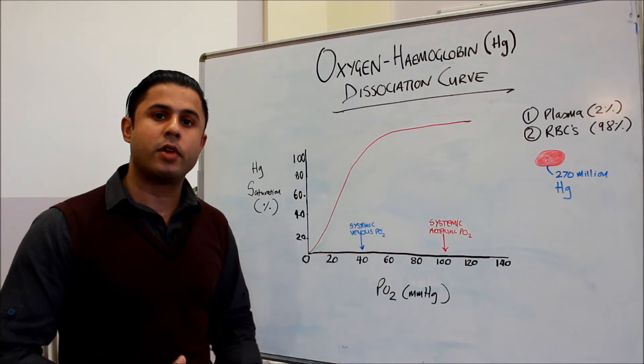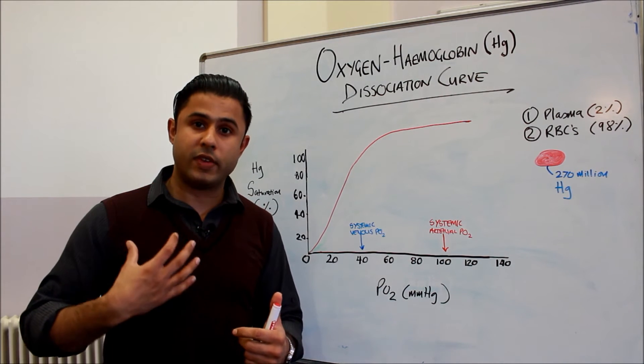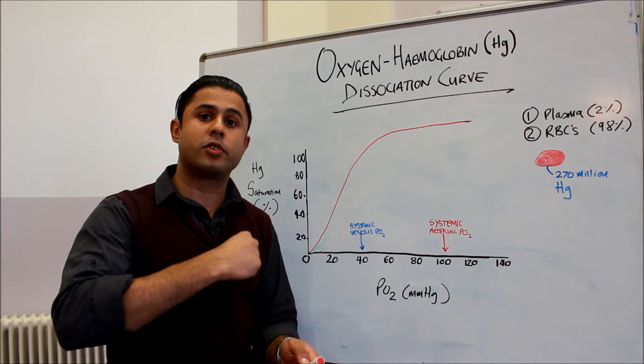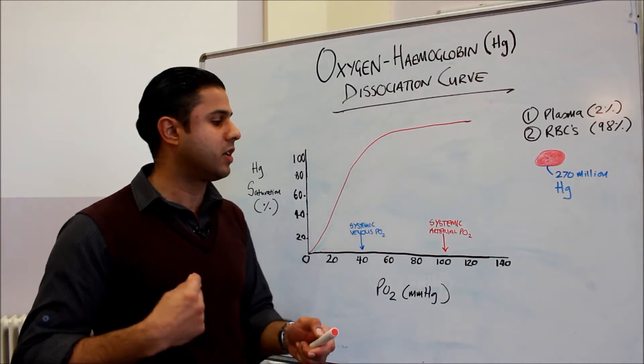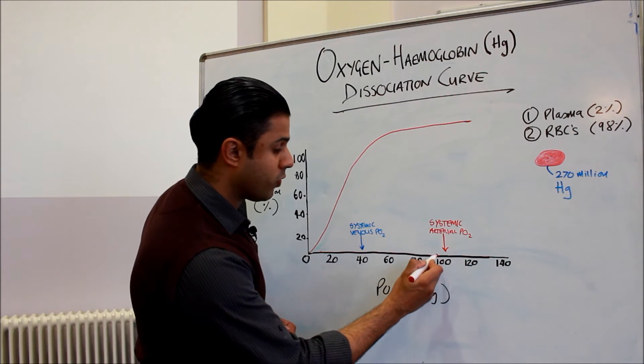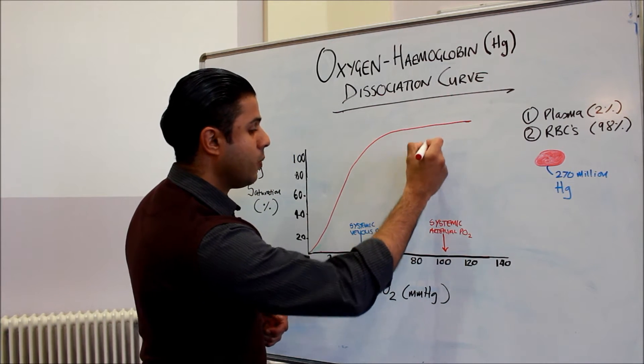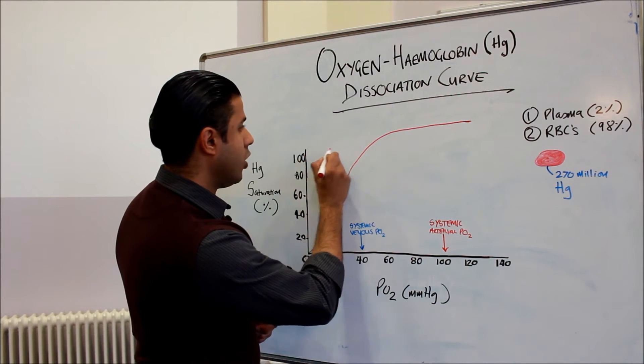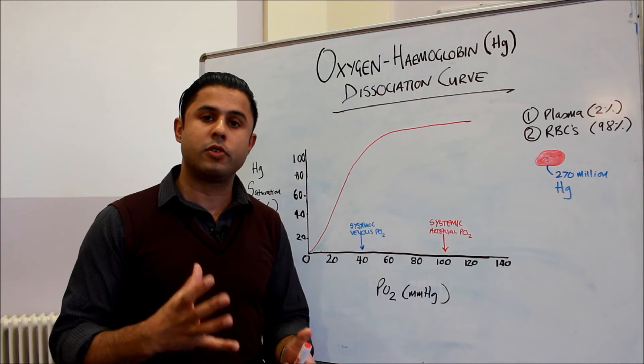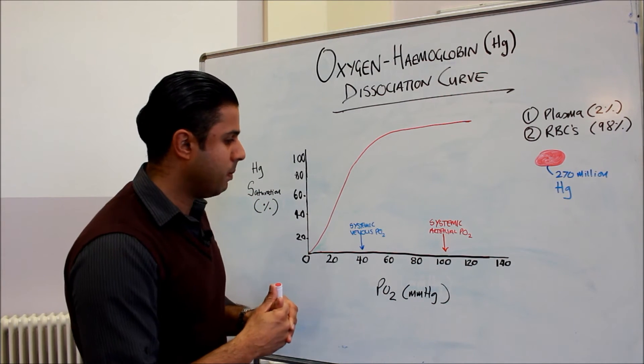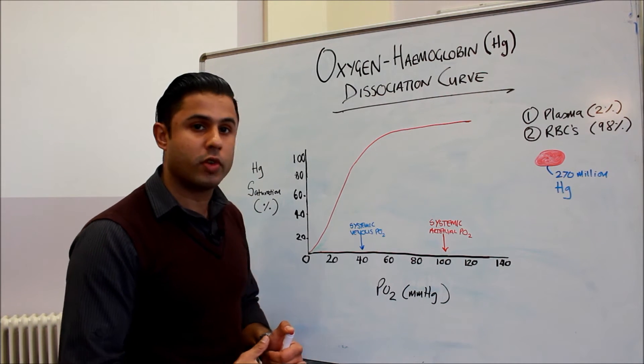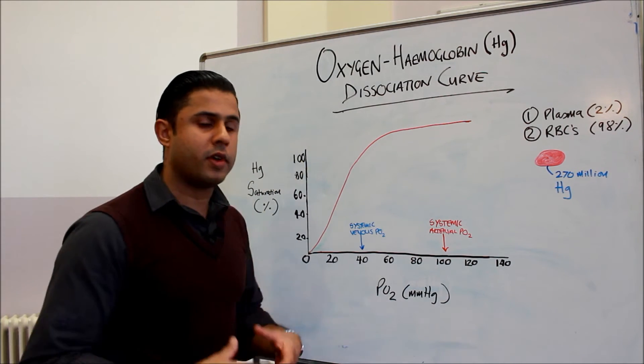So essentially what's happening is when we've got blood returning from the lungs into our left atrium, it then goes into the left ventricle. The left ventricle contracts and the blood goes out into the aorta into the systemic circulation. And we can see that in the aorta, the blood is almost 100% saturated with oxygen. So we've got 100% saturation of oxygen with the hemoglobin—all of the hemoglobin molecules contain four oxygen molecules and the pressure of oxygen is approximating to 100 millimeters of mercury.